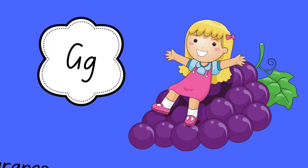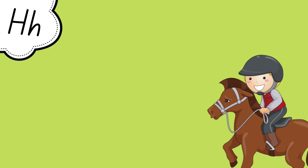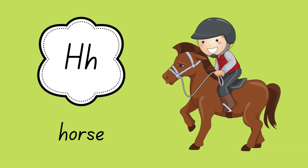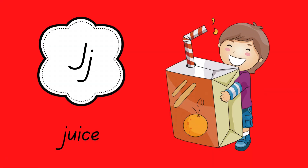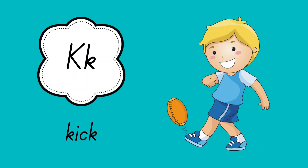G is for grapes. H is for horse. I is for ice cream. J is for juice. K is for kick.